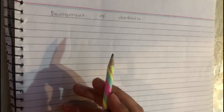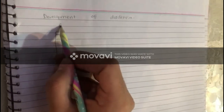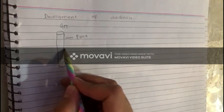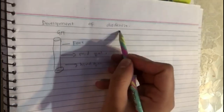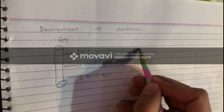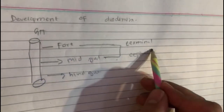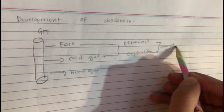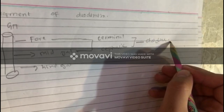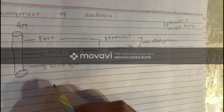Previously we discussed the development of the stomach, and before that the primitive gut. This is our gut — this part is our foregut, this part is our midgut, and this is our hindgut. The duodenum is derived from both the foregut and the midgut — specifically the terminal part of the foregut and the cephalic part of the midgut. These two parts together develop the duodenum.